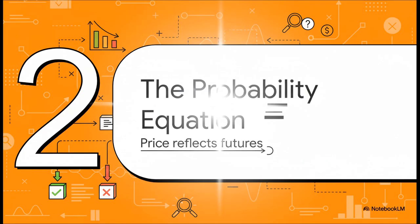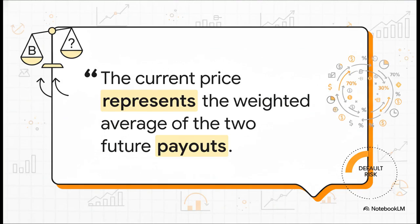Okay, so we have the price today, and we have the two possible payouts in the future. How do we connect them? This is where it gets really cool. We're going to build a simple equation that shows how today's price is basically a weighted average of those two futures.